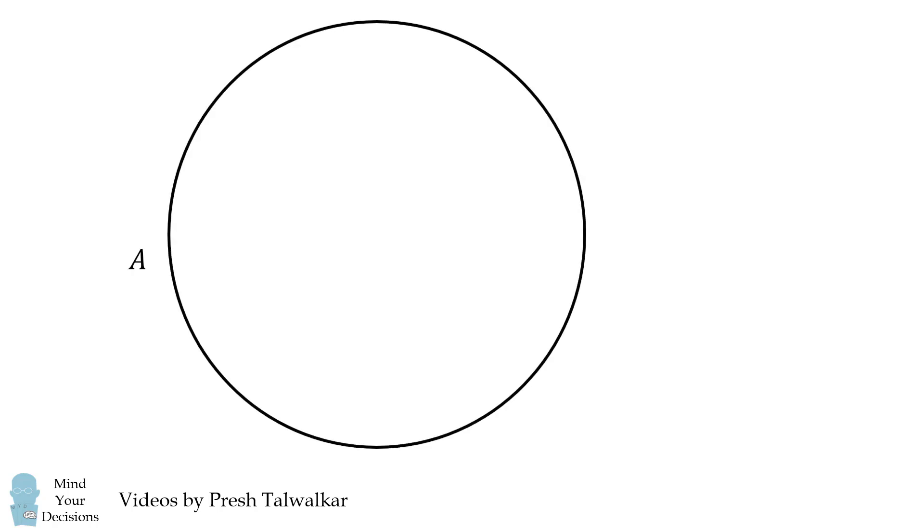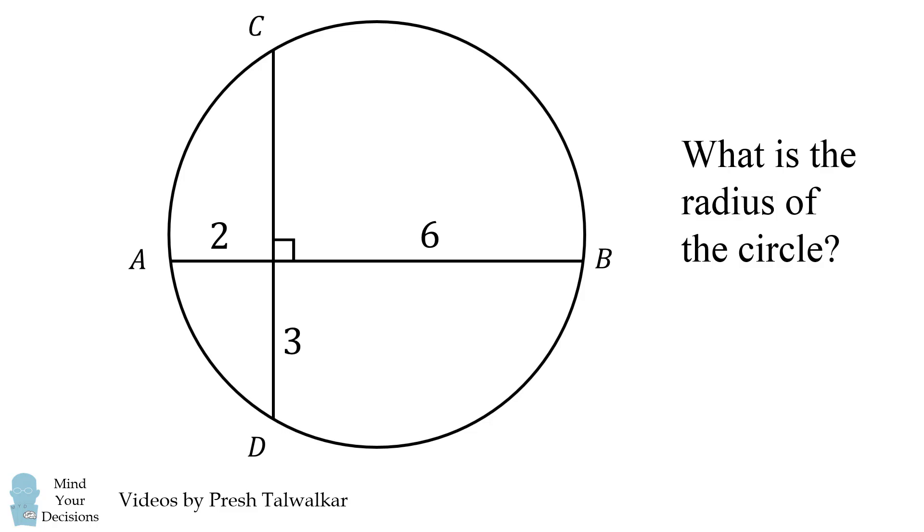In the following circle, chord AB is perpendicular to chord CD. These lengths are given. The question is what is the radius of the circle?